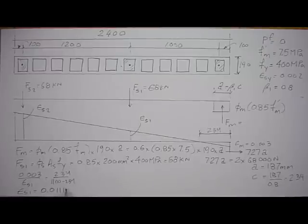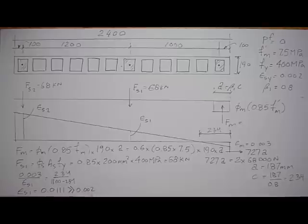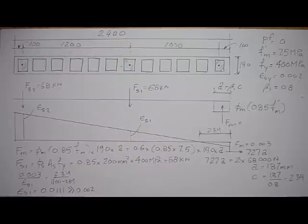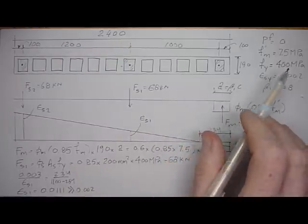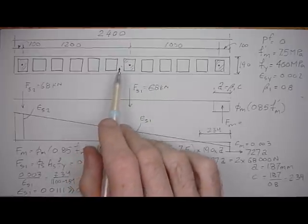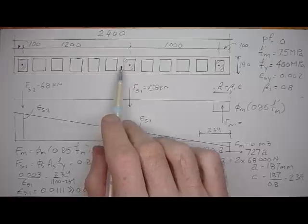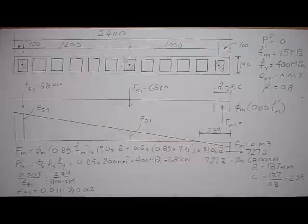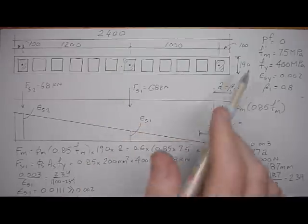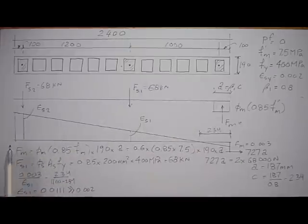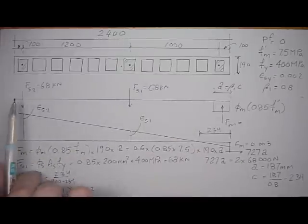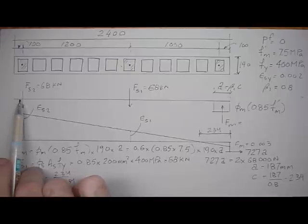That strain of 0.0111 is much greater than 0.002, so the steel does yield, confirming our assumption. Now all that's left is to calculate the moment resistance of the section. Because there is no axial load, we're free to take moments about any point, so let's take moments about the tension steel location.